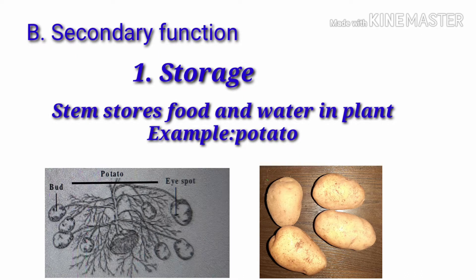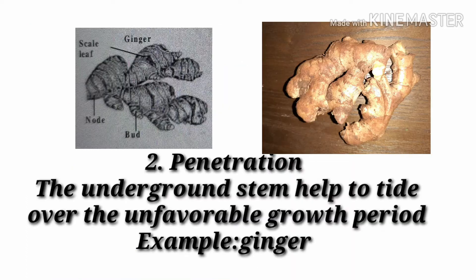Secondary functions of the stem include storage. The stem stores photo-assimilates and water in the plant. An example is the potato — the picture represents the potato tuber, which is a modified form of stem.